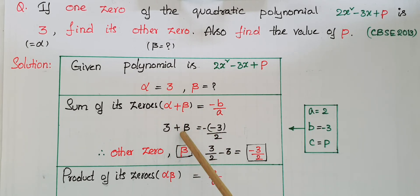So β = 3/2 - 3. This equals (3 - 6)/2 = -3/2. Therefore, the other zero β = -3/2.